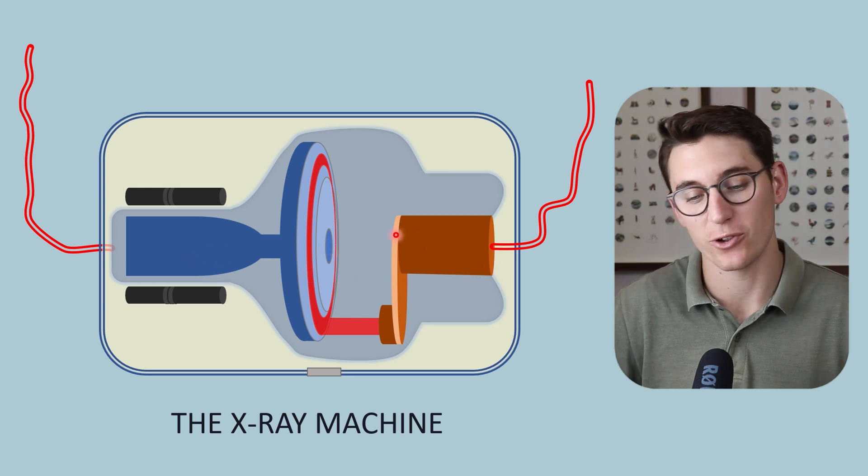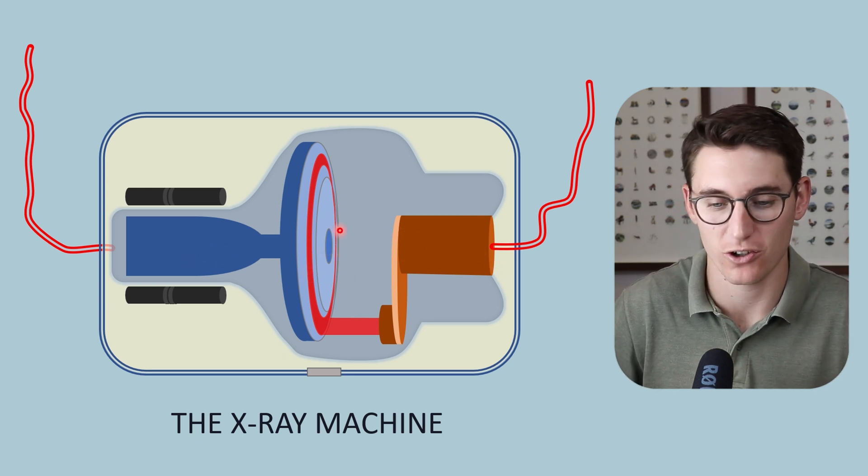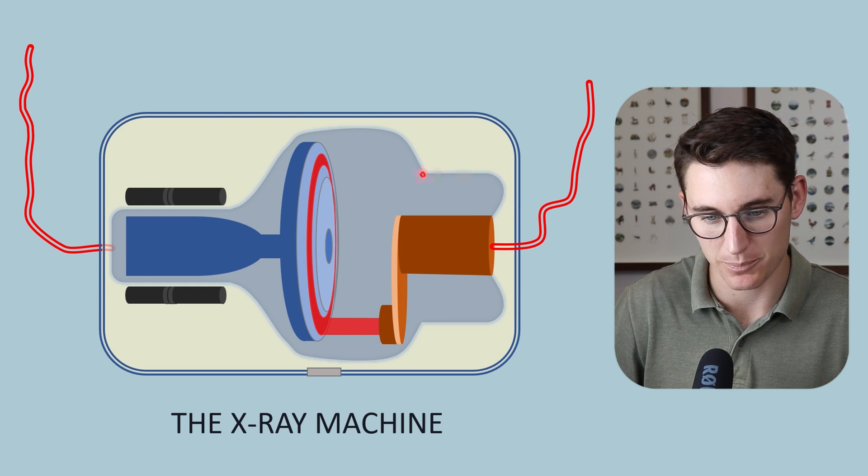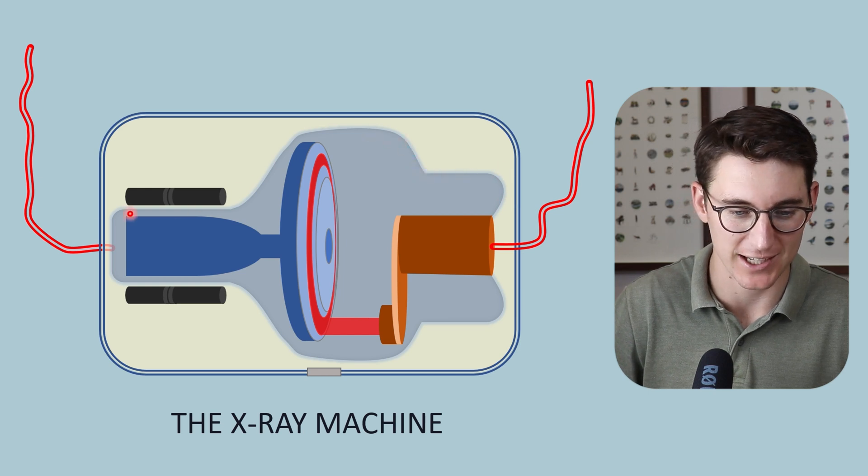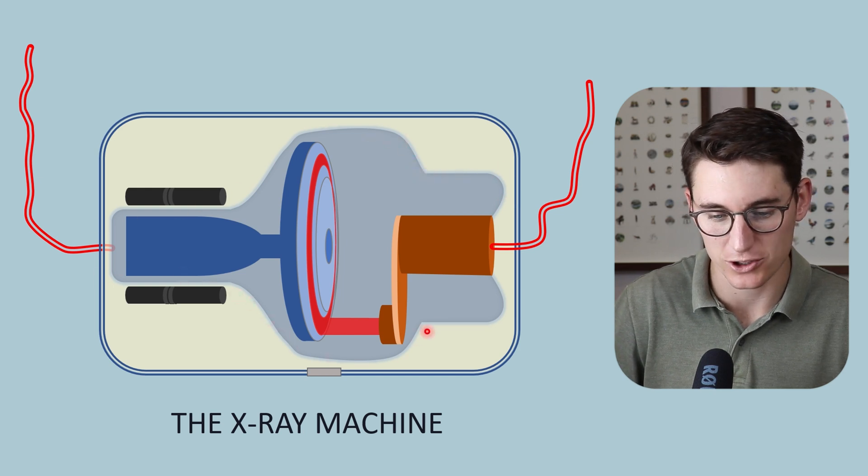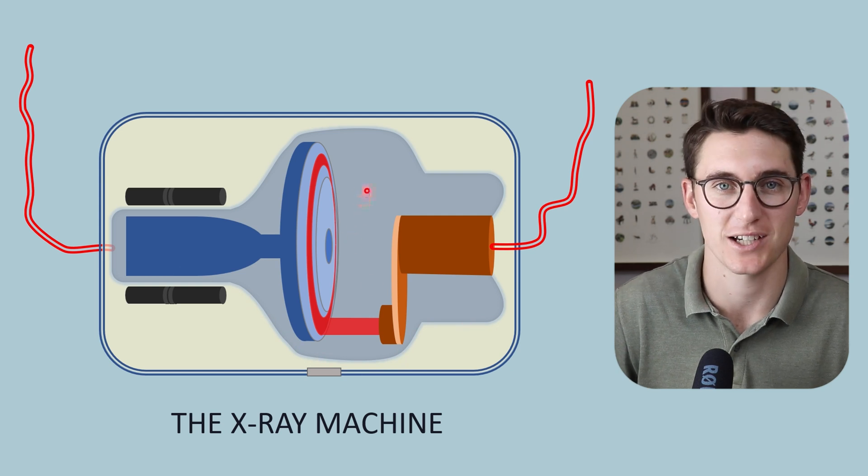The anode and the cathode lie within a glass envelope. You can see by this blue structure that surrounds the cathode and the anode, this is a glass envelope which has a vacuum inside.